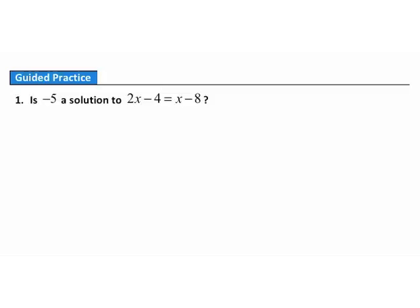Question 1. Is negative 5 a solution to this equation? We want to plug it in to find out. First, put open sets of parentheses wherever there was a variable: 2, open parenthesis, minus 4 equals open parenthesis minus 8. Now substitute negative 5 in both places. On the left, I want to do the multiplication first — 2 times negative 5 gives me negative 10.